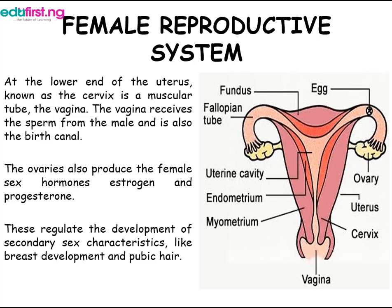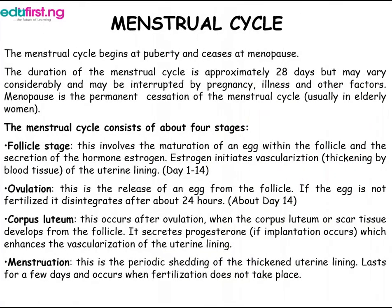The menstrual cycle begins at puberty and ceases at menopause. The duration of the menstrual cycle is approximately 28 days, but may vary considerably and may be interrupted by pregnancy, illness, and other factors. Menopause is the permanent cessation of the menstrual cycle, usually in elderly women. The menstrual cycle consists of about four stages.